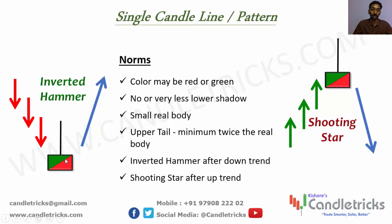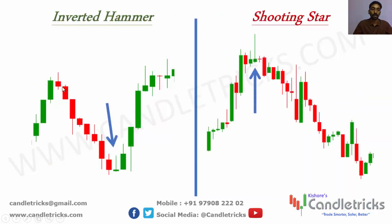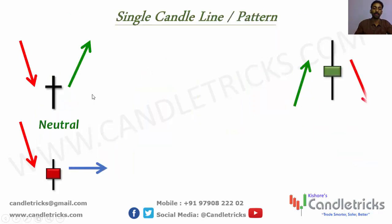Next: inverted hammer or shooting star. Norms: small real body, red or green; small lower shadow acceptable; upper shadow must be minimum two times the real body. If the formation forms after a downward movement, it is an inverted hammer — clear indication for trend reversal upward. After an upward movement, it is called shooting star — clear indication for trend reversal from upward to downward. Example: after downward movement, inverted hammer forms, entry above high, price goes up; after upward movement, shooting star forms, entry below low, then price reversal happens.